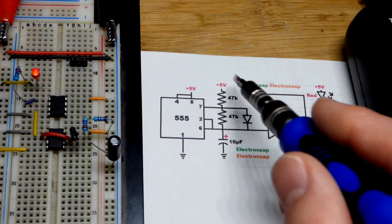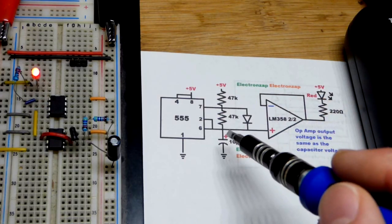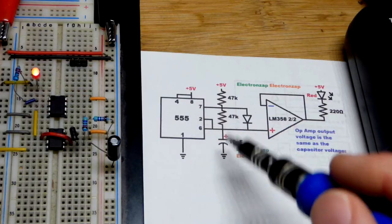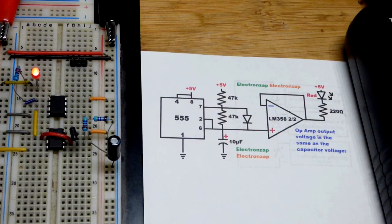The capacitor charges through one resistor and then discharges through another. Their values determine the speed.